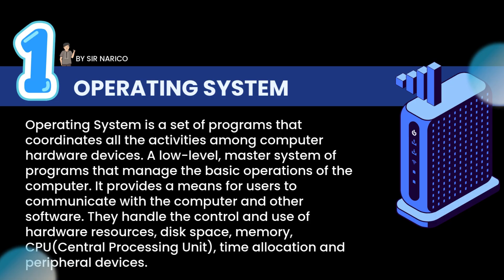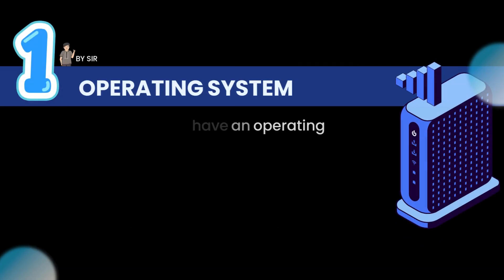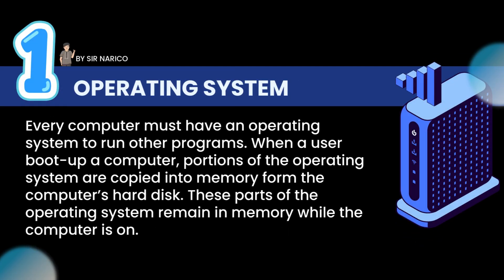The operating system handles the control and use of hardware resources such as disk space, memory, CPU (central processing unit), time allocation, and peripheral devices. Every computer must have an operating system to run other programs. When a user boots up a computer, portions of the operating system are copied into memory from the computer's hard disk, and these parts remain in memory while the computer is on.